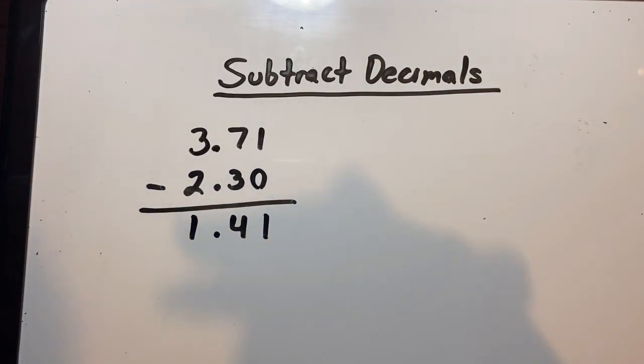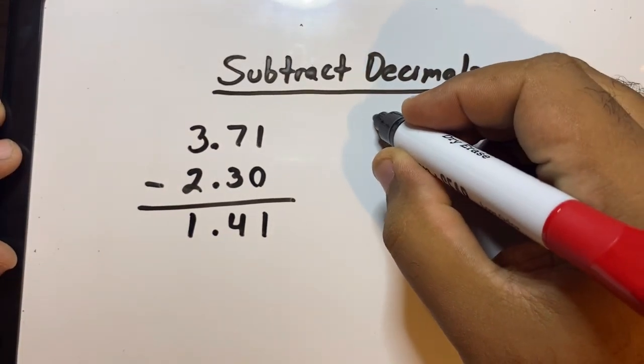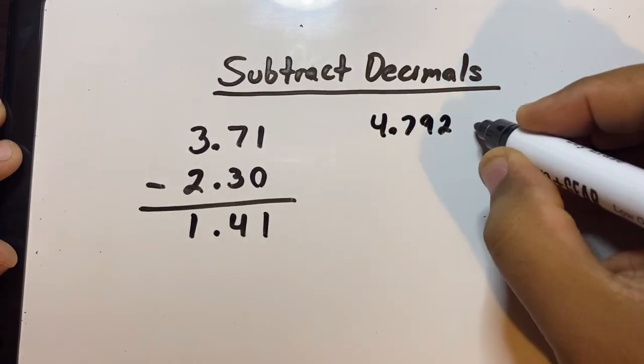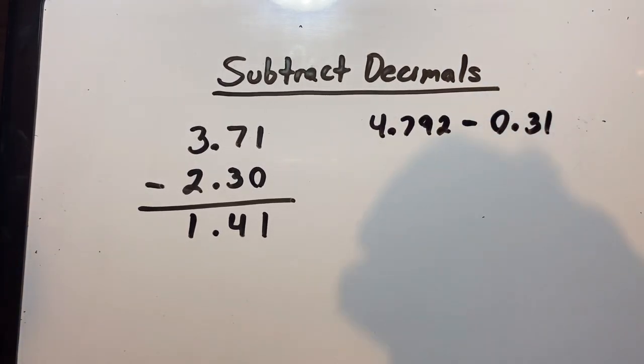You see, subtracting decimals and subtracting whole numbers are the same thing. The only difference is you have decimal points now. Okay, but Mr. V, what if we have decimals that look like this? What if it's like 4.792 minus 0.31?